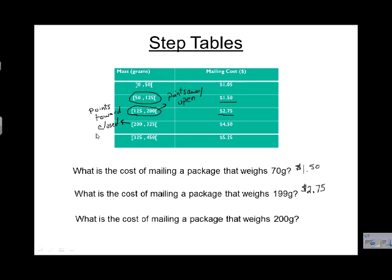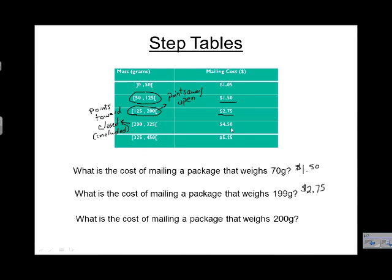When the bracket points toward the number, it means it's closed. And just like with the closed dot, the closed tells us that this is where it's included in this group. So if the package is exactly 200 grams, it's going to be $4.50 rather than $2.75.